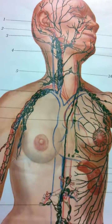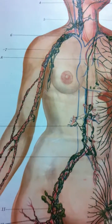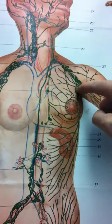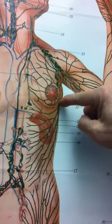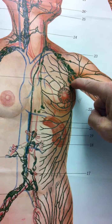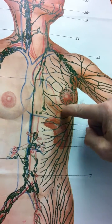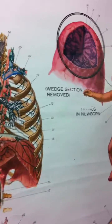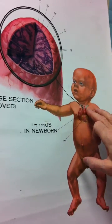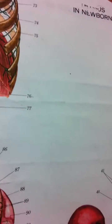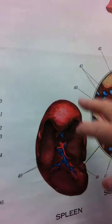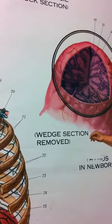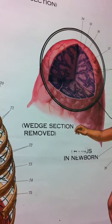The mammary plexus is the extension of the lymphatic plexus draining the mammary gland. The thymus is here, the spleen is here. The tonsils we're not going to do at the present time — we'll get to those when we get to the respiratory system.